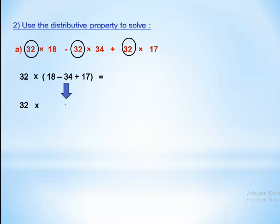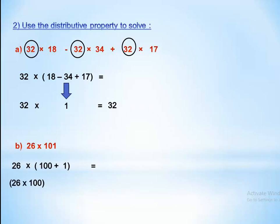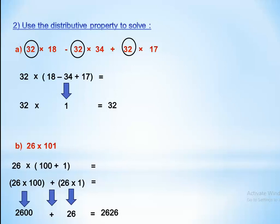For 26 by 101, we can decompose 101 as 100 plus 1, so it becomes 26 by (100 plus 1). Using distribution: (26 by 100) plus (26 by 1) equals 2600 plus 26 equals 2626.